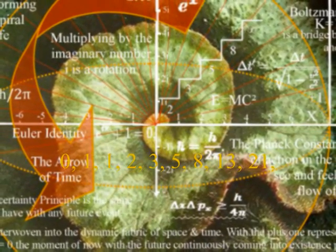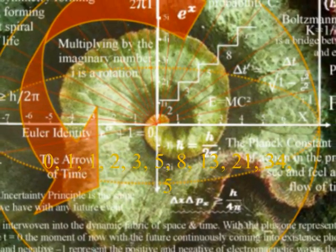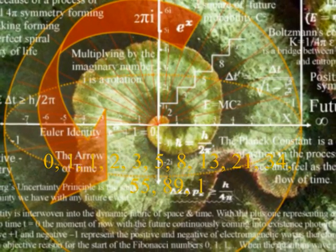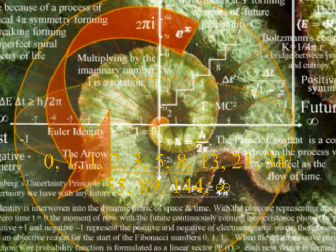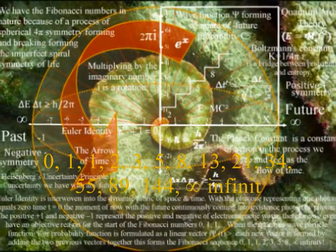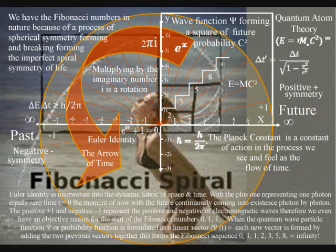We have the Fibonacci spiral in nature, not because of the economy of growth, but because it is linked to the broken symmetry that forms the fabric of space and time. Therefore, it is formed by anything over a period of time that has a vector. The direction of growth of a plant mathematically forms a linear vector, and therefore we see the Fibonacci spiral in plant life. A beautiful example of this is a photo of a girl flicking her head with wet hair — the water comes off her hair and over a period of time forms the Fibonacci spiral.